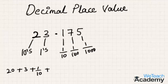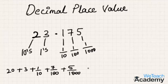7, which is in the 1/100th place, becomes 7/100. And 5, which is in the 1/1000th place, becomes 5/1000. This equals 23.175 — this is the expanded form for this decimal number.